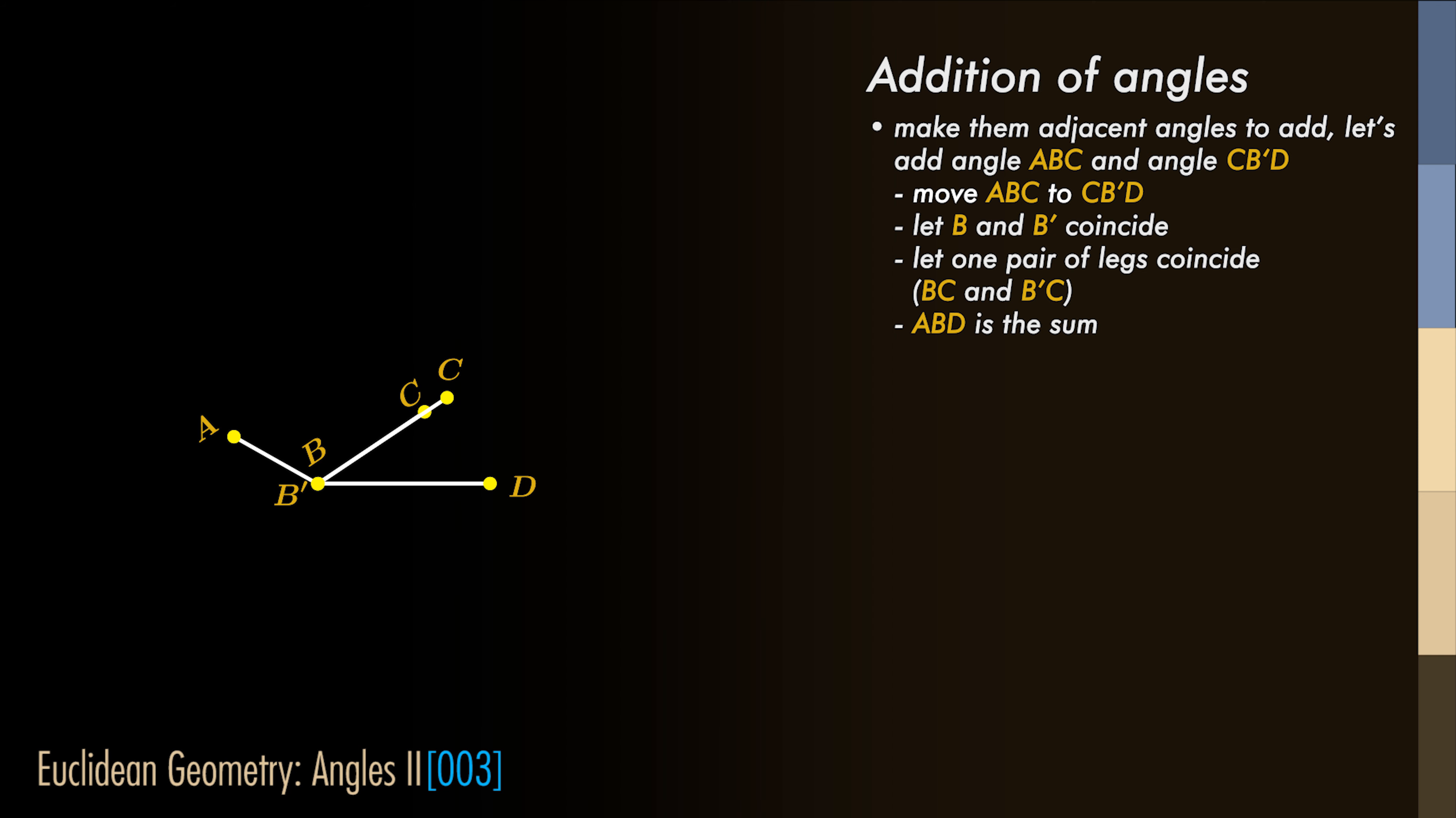Lastly, we say that an angle ABD is bigger than ABC if the first one is equal to the sum of this angle and another angle.